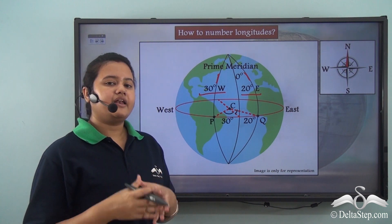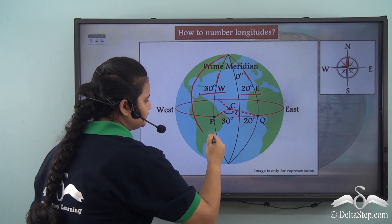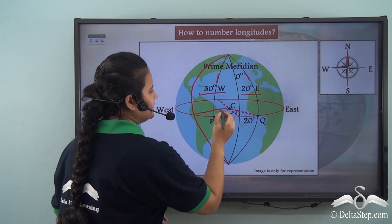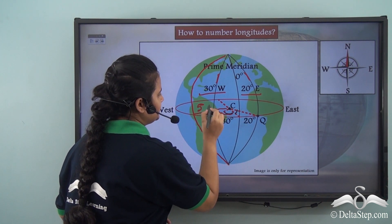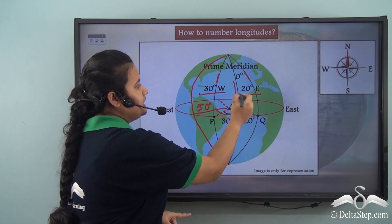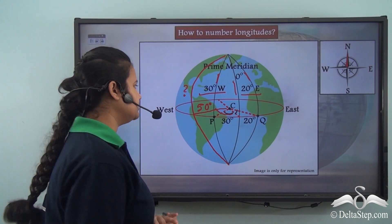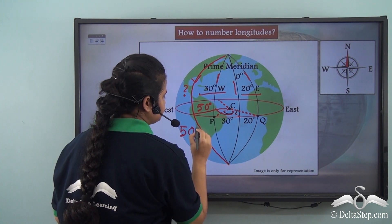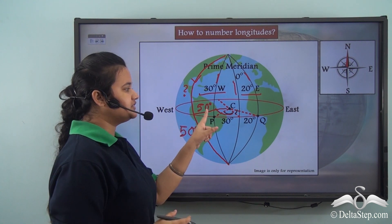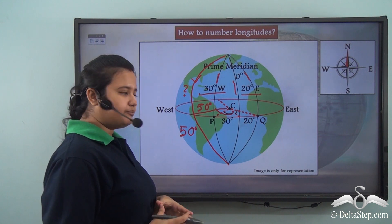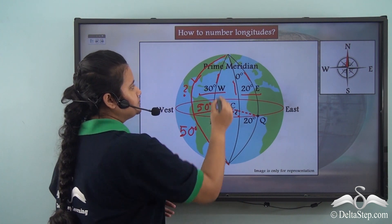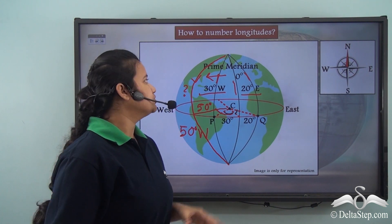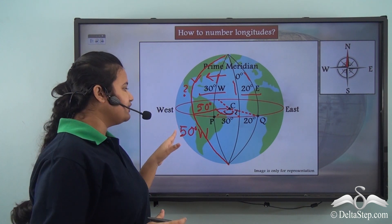Let us take another line that lies to the west of the prime meridian and suppose this particular line makes an angle of 50 degrees with the prime meridian. The number that can be assigned to this longitude is 50 degrees, since it makes an angular distance of 50 degrees with the prime meridian. Since this longitude lies to the west of the prime meridian, a suffix W is added. So this particular longitude can be marked as 50 degrees West.